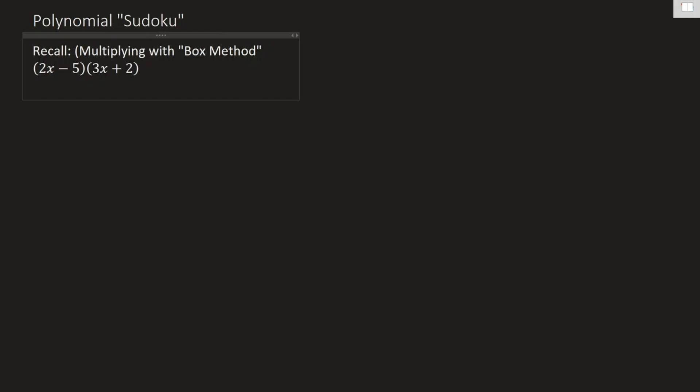Now before we jump into this, the idea of Polynomial Sudoku is it's essentially box method or area model, lattice method, whatever you want to call it, multiplication, but with blanks in different spots. So before we jump into moving the blanks around, let's just do a quick recap of how you do polynomial multiplication with the box method.